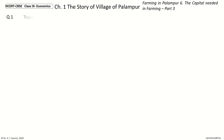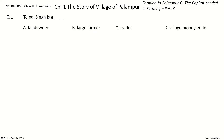Question 1. Tejpal Singh is a Dash. The options are: Landowner, Large Farmer, Trader, Village Money Lender. And the answer is Large Farmer. So, Tejpal Singh is a Large Farmer.